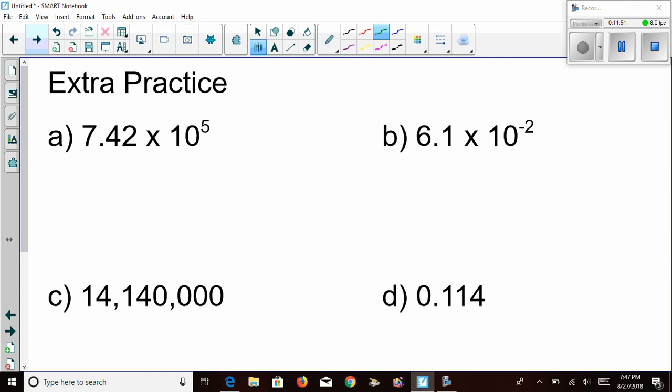What you're asked to do is to rewrite the number into the other form, meaning for A and B, those are written in scientific notation. So I want you to write them in standard form. For C and D, those numbers are in the standard form. So I want you to rewrite them into scientific notation.